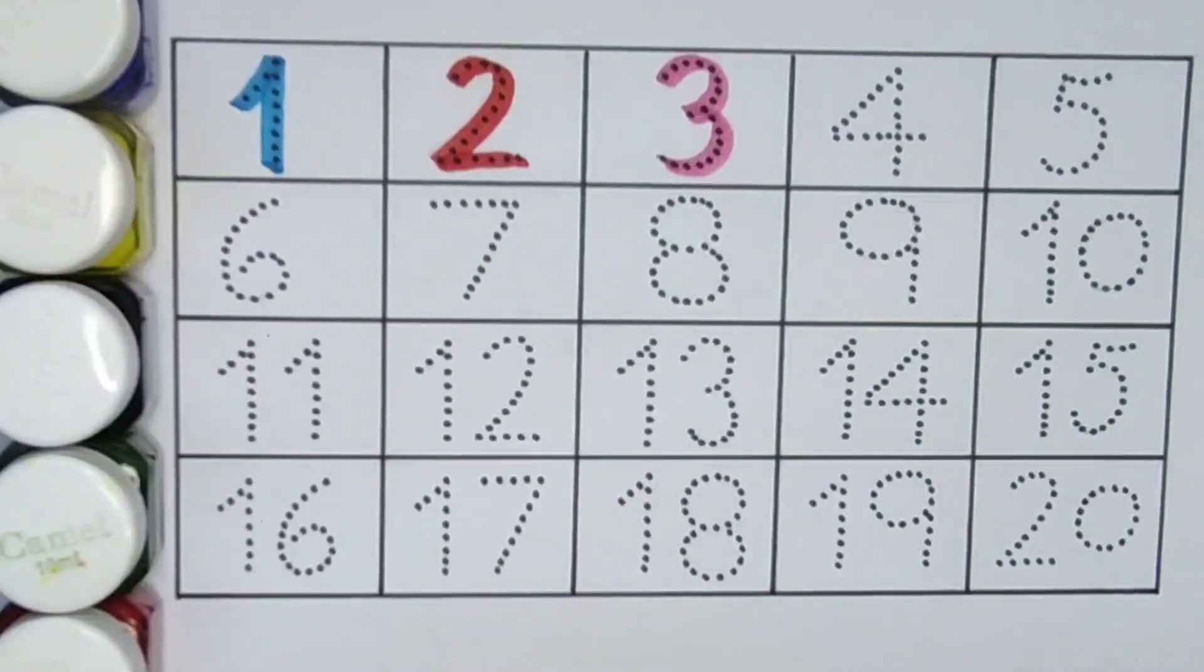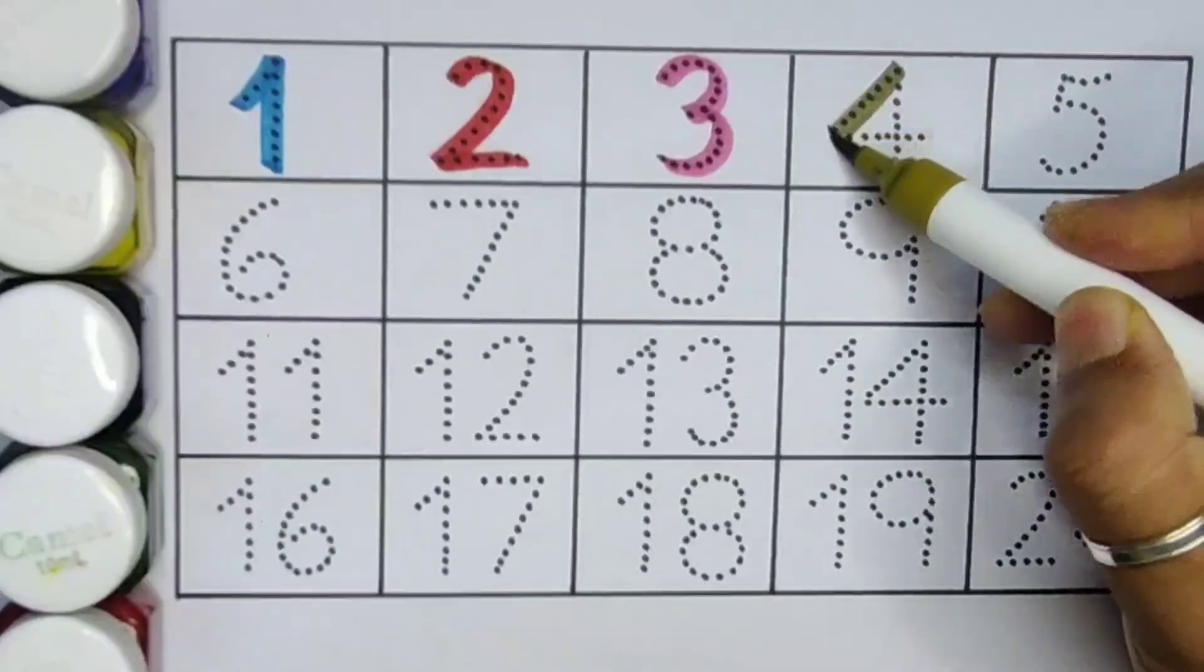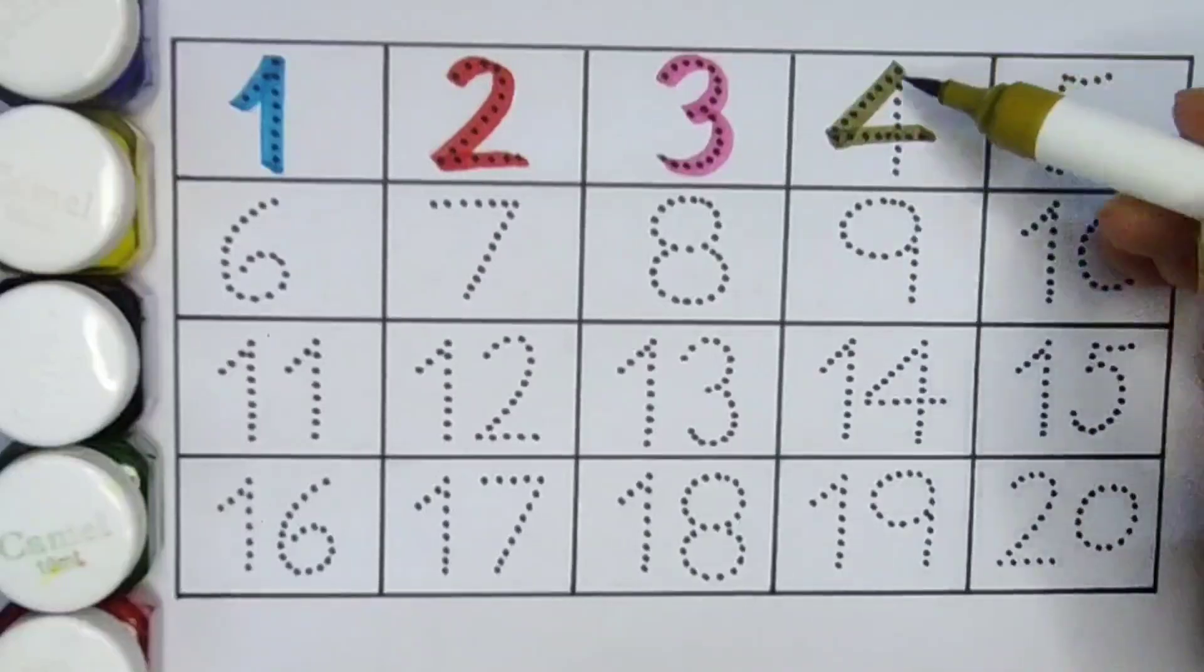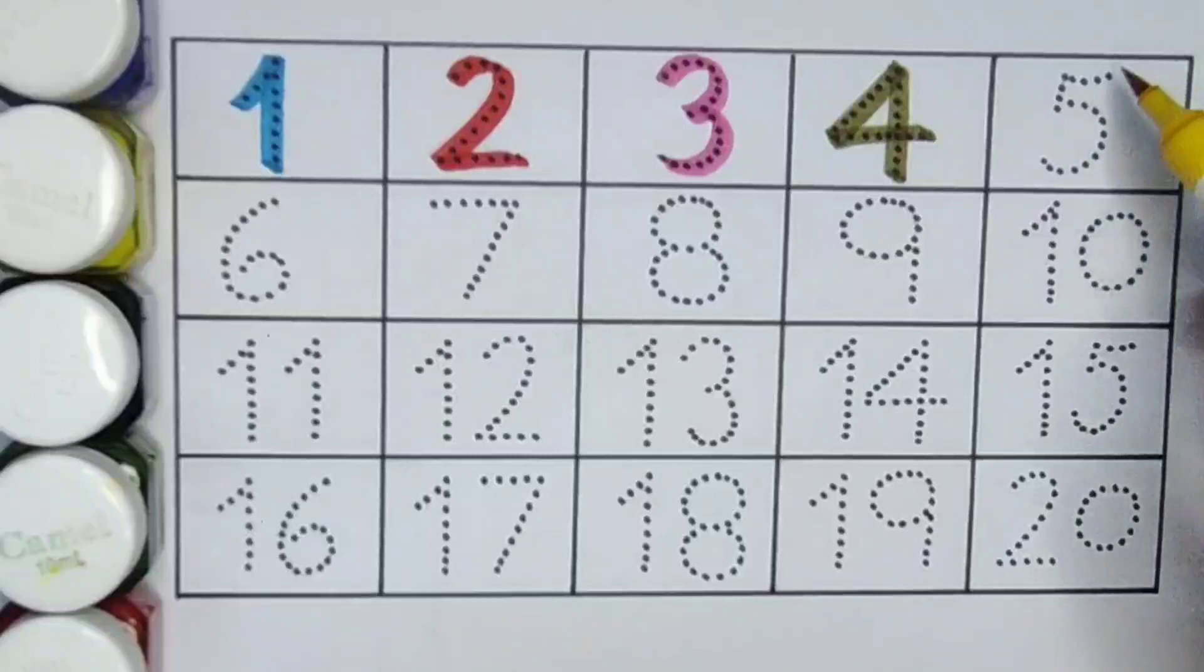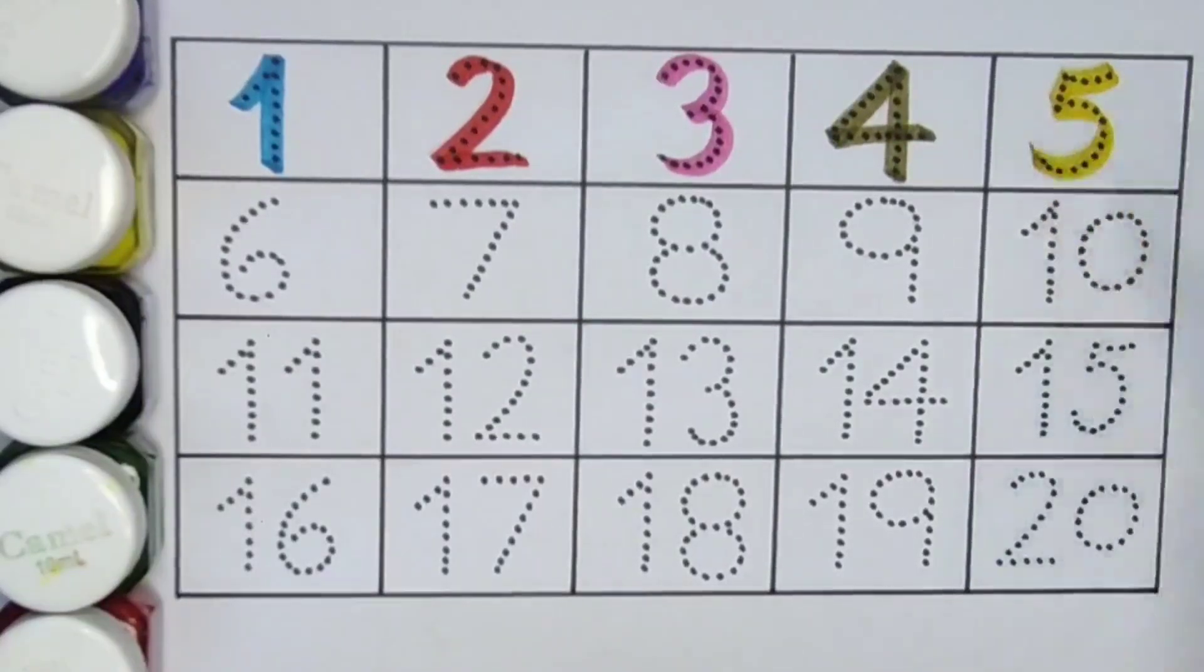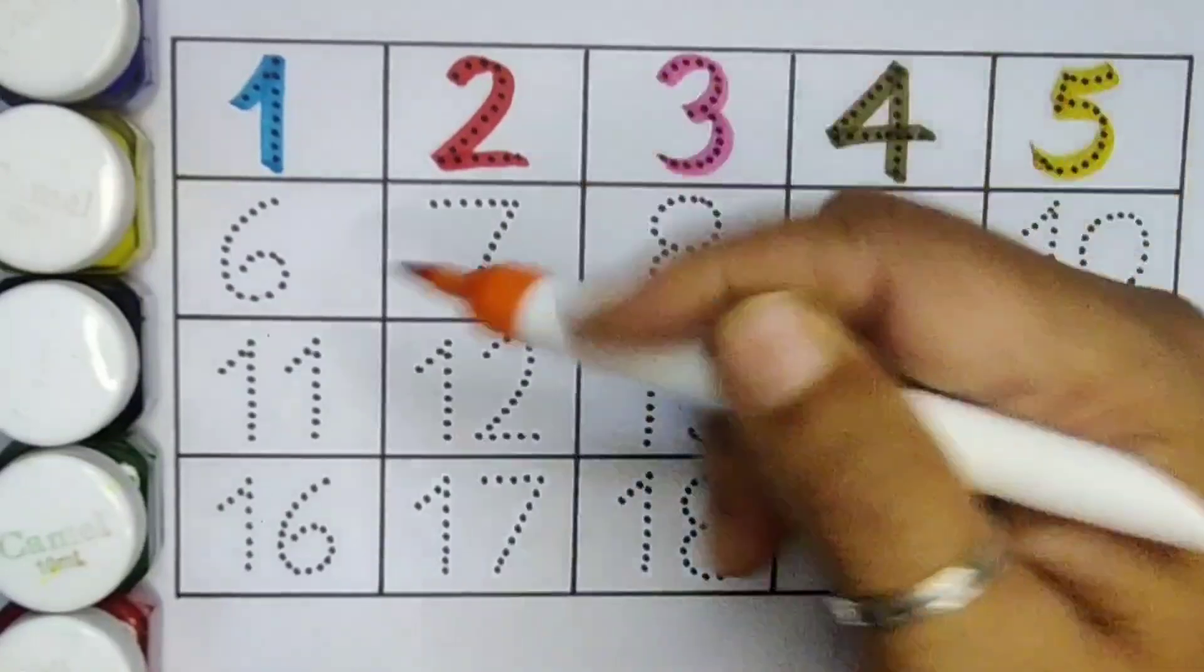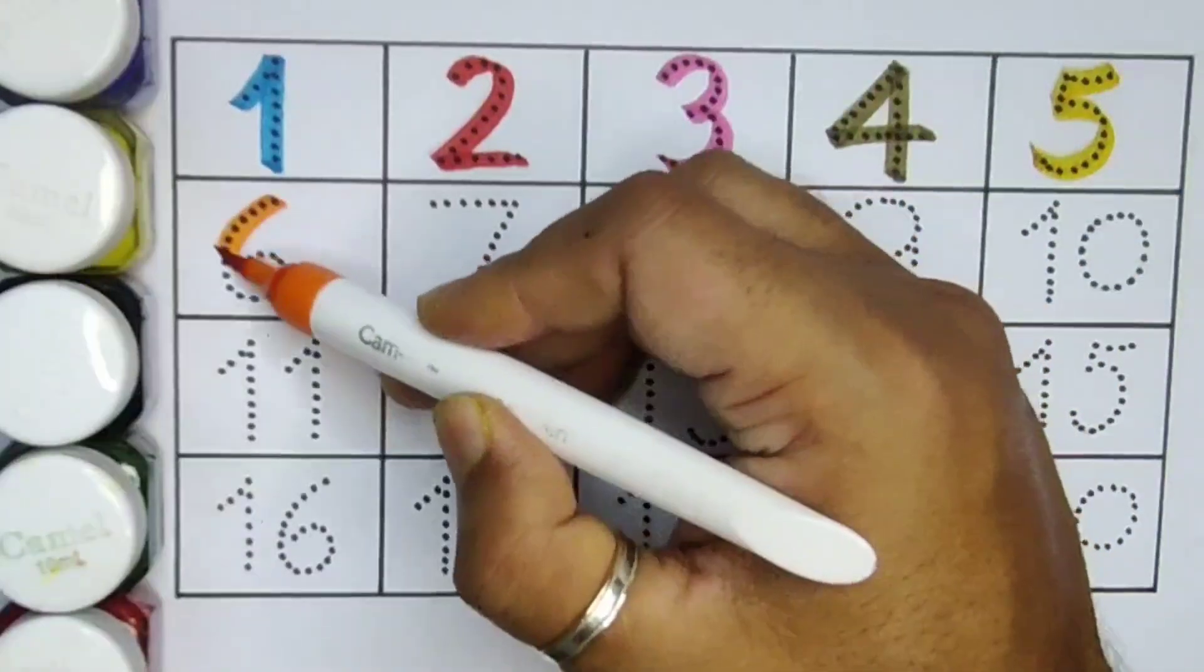Next kids 4. Number 4. Next kids 5. Number 5. Next kids 6. Number 6.